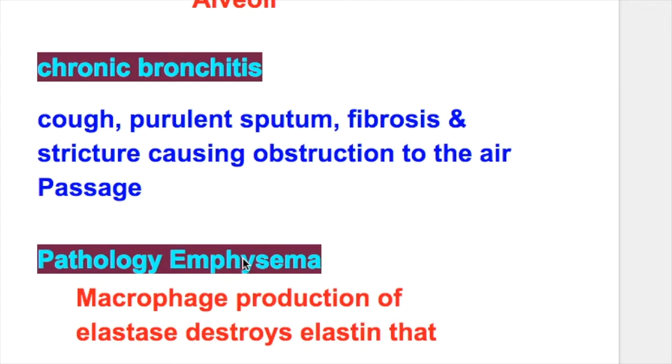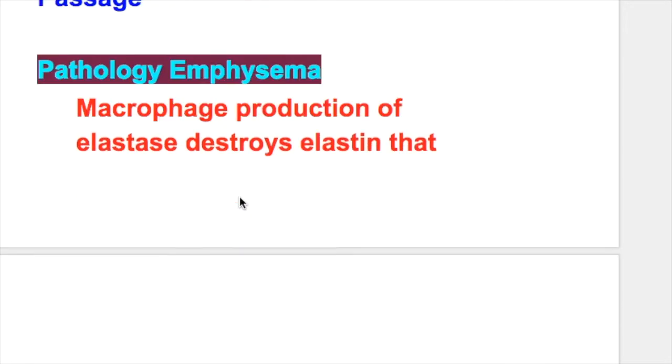Whereas in chronic bronchitis, there is cough, purulent sputum, fibrosis and stricture causing obstruction to the air.